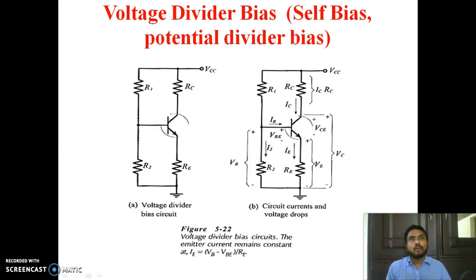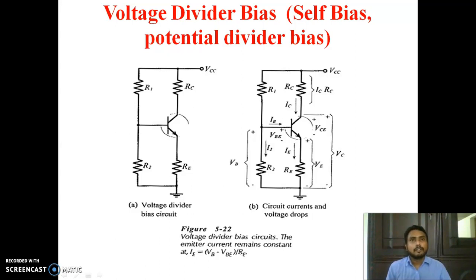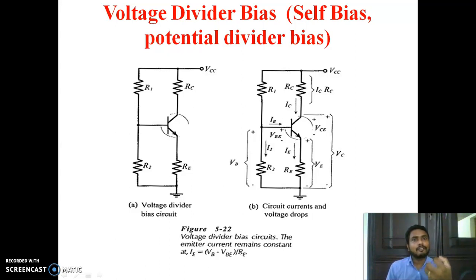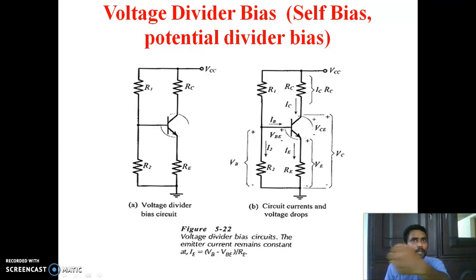But when the amplifier is operating, it may generate heat. Due to this heat, temperature fluctuation, or any fluctuation in the supply or any other thing, normally this Q-point may change. Due to temperature also it may change — I will explain that later. So in such a situation we have to design a circuit that keeps the Q-point exactly at its active location. When the Q-point is trying to change to any other location, we have to bring it back to the actual point.